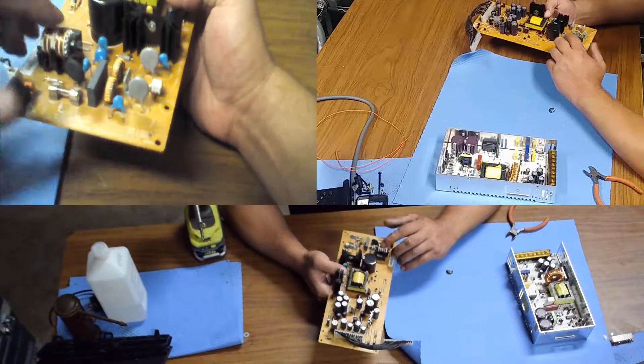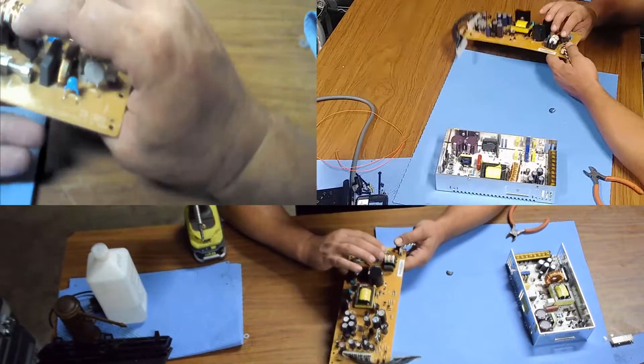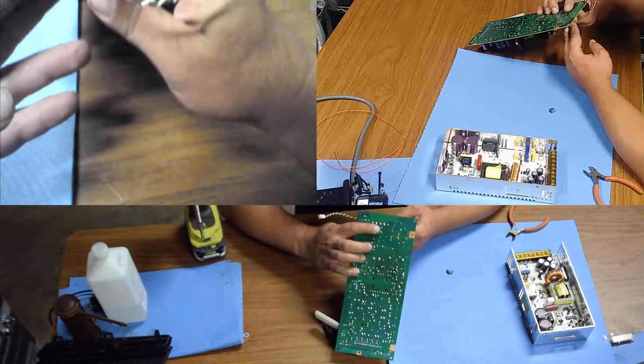In my hands is a Hitachi projection television power supply board, and it has what appears to be a pretty sturdy thermistor in there. Unfortunately, I can't identify it. There are no markings.